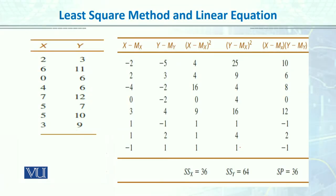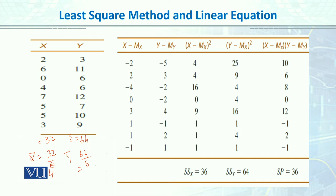So these are the two variables and I will solve it. First, we need to get the mean of x and y. We have the x column, and if we total it, that is 32. We divide it by 8, so the mean of x is equal to 4. Then for y, the total is 64, and 64 divided by 8 gives us a mean of y equal to 8.